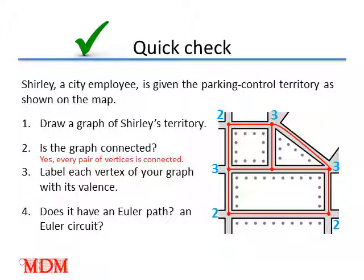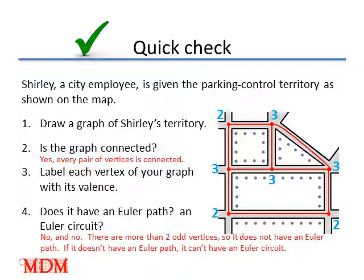Does it have an Euler path? An Euler circuit? No, it doesn't have an Euler path and no, it's not an Euler circuit, because there are more than two odd vertices, so it does not have an Euler path. If it doesn't have an Euler path, it cannot have an Euler circuit, because an Euler circuit is a special case of the Euler path. I hope that by doing this brain activator, you'll have a much easier time when you work on problems like this later on.